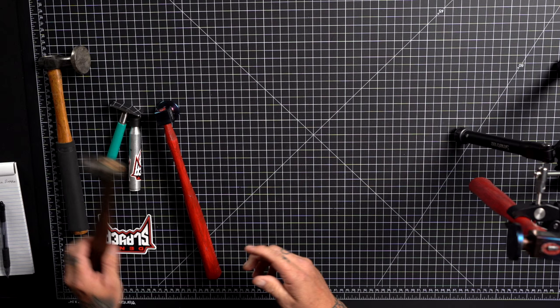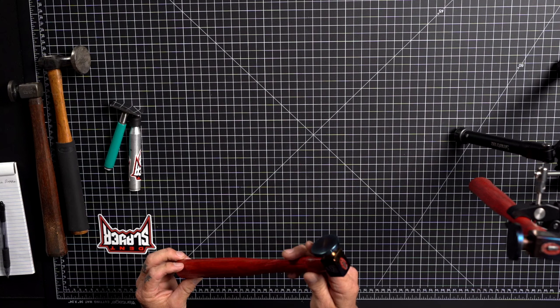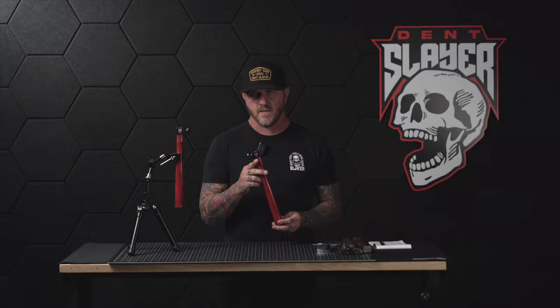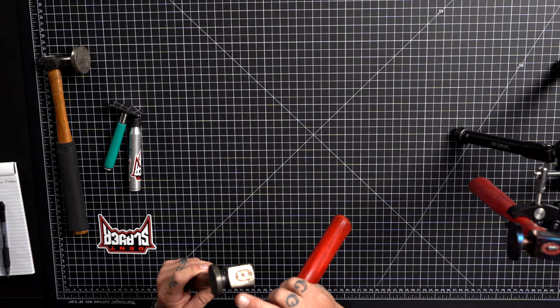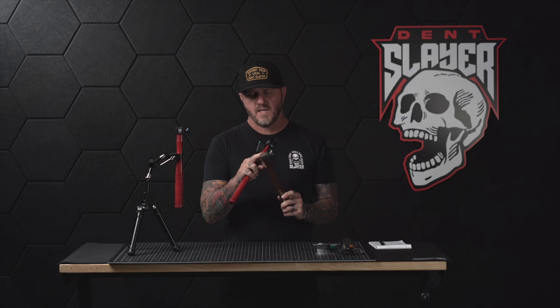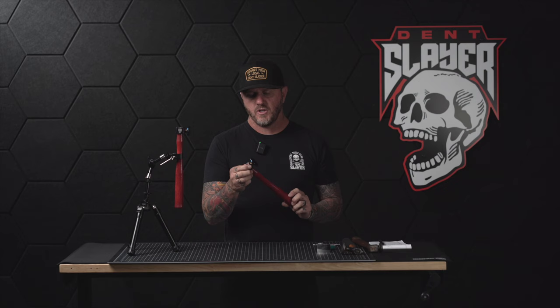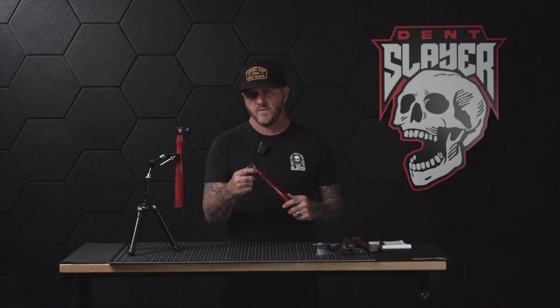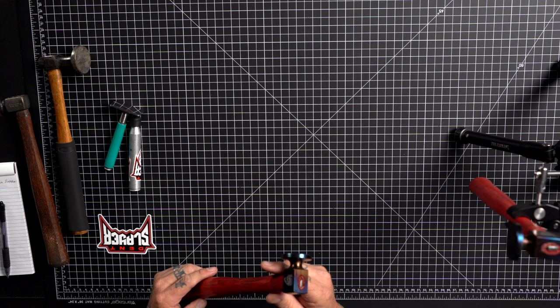So we came up with our own, which is the Dent Slayer low profile knockdown hammer. The thing we like about this one over the Snap-on one is the Snap-on one is cast steel, whereas this is machined. It's not cast, it's machined 4140 and then heat treated for tempering and also to give it this really cool color variation. The weight is going to be different on the Snap-on one versus ours.